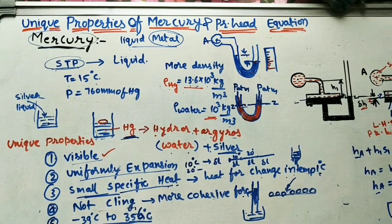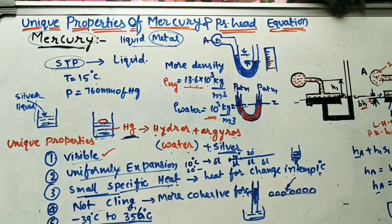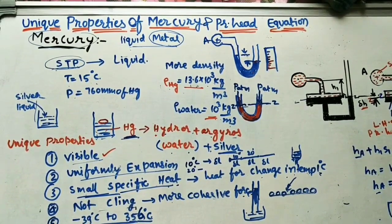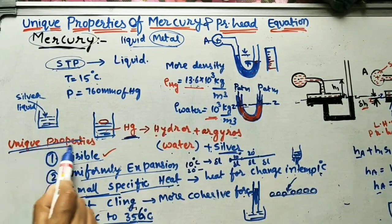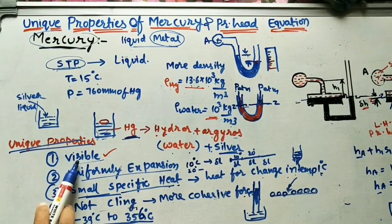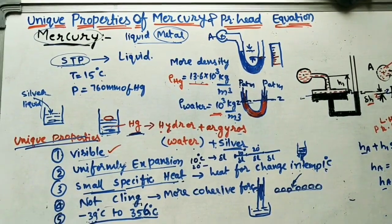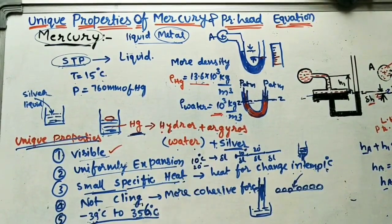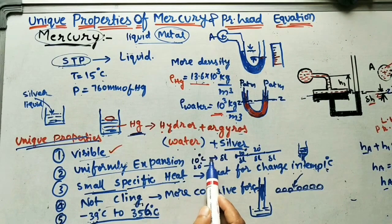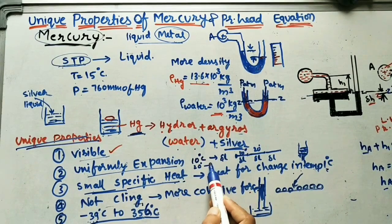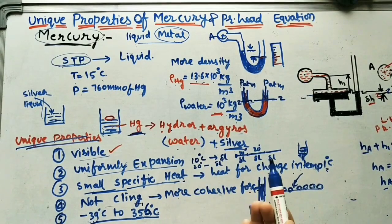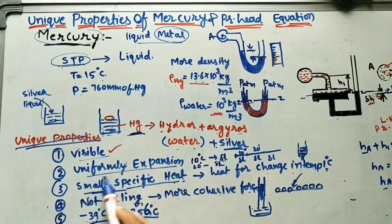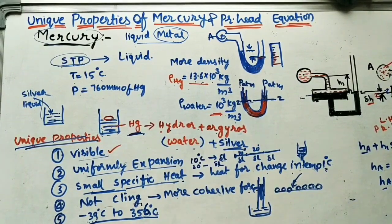Mercury is used in about 90% of labs for finding pressure. One key reason is it is clearly visible because of its silver color. Another property is uniform thermal expansion — for every 10-degree rise in temperature, the expansion delta L is uniform and consistent.